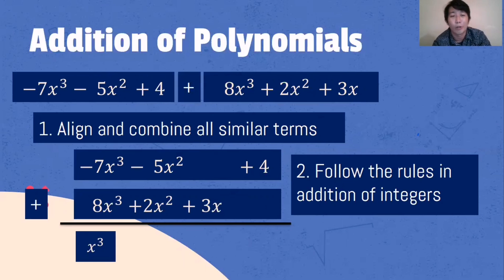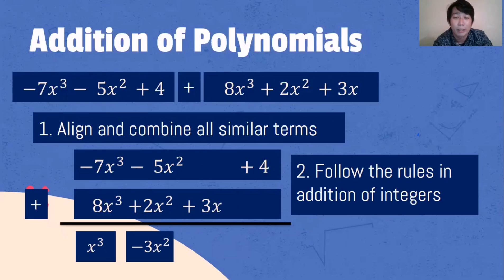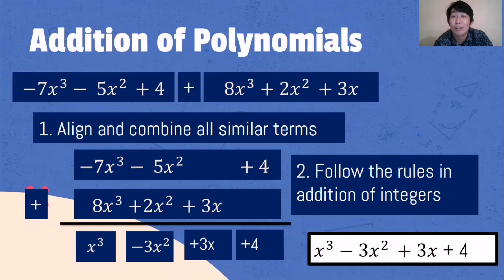Proceeding to addition and following the rules for integers: negative 7x cubed plus 8x cubed — that is 1x cubed, because negative 7 plus 8 is 1. Negative 5x squared plus 2x squared — we have different signs so we subtract and follow the sign of the higher absolute value — the answer is negative 3x squared. We have nothing to add to 3x so we bring it down, and we bring down the constant 4. The final answer is x cubed minus 3x squared plus 3x plus 4.